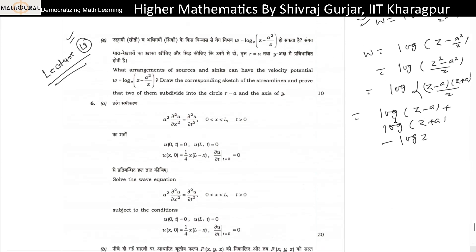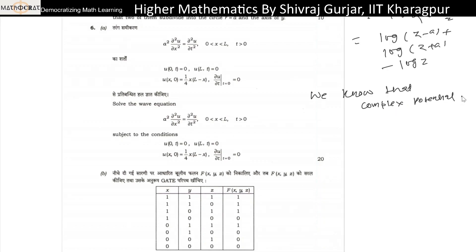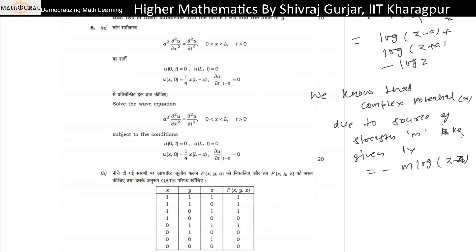Now let us see what arrangement of sources and things will give rise to this complex potential. We know that the complex potential w due to a source of strength M at z-naught is given by M·log(z - z-naught). Due to the source of strength M, z is given by this.